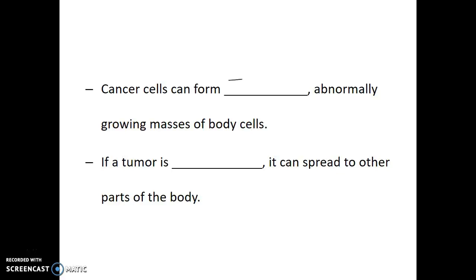Cancer cells can form tumors, which are abnormally growing masses of body cells. Tumors growing within a tissue can interfere with that tissue. But the biggest danger of cancer comes when those cancer cells and tumor cells start spreading into neighboring tissues and neighboring parts of the body. We say that a tumor is malignant if it has cancer cells that can spread to other parts of the body.